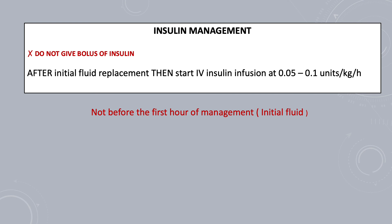The second treatment that is started is insulin infusion. Never give an insulin bolus and never start insulin before the initial fluid is given, which is typically around one hour. The insulin is started at the rate of 0.05 to 0.20 units per kg per hour. Low dose insulin of 0.05 units per kg per hour came from a randomized controlled trial which showed that low dose is non-inferior to standard dose with respect to rate of blood glucose decrease and resolution of acidosis.